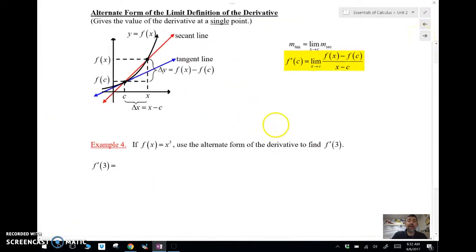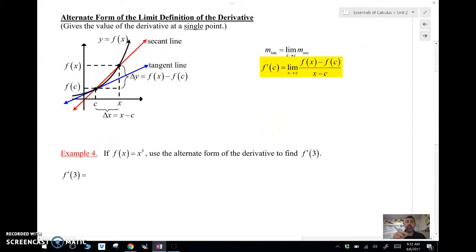This one, we're looking at a point, so we're looking for the derivative at a point. We can use this: f prime of c equals the limit as x approaches c of f of x minus f of c over x minus c.